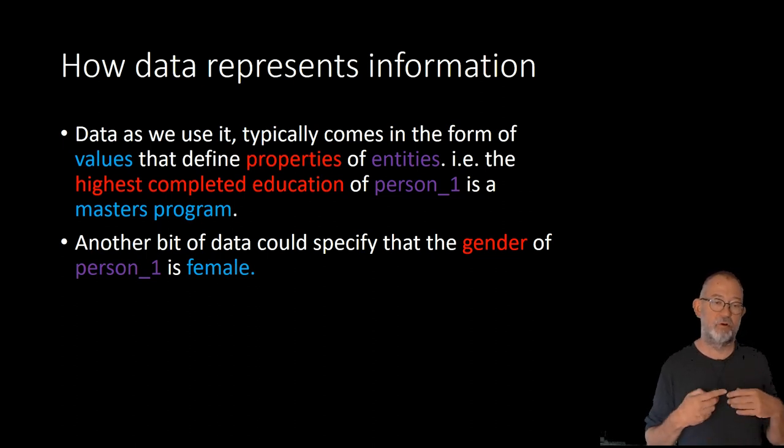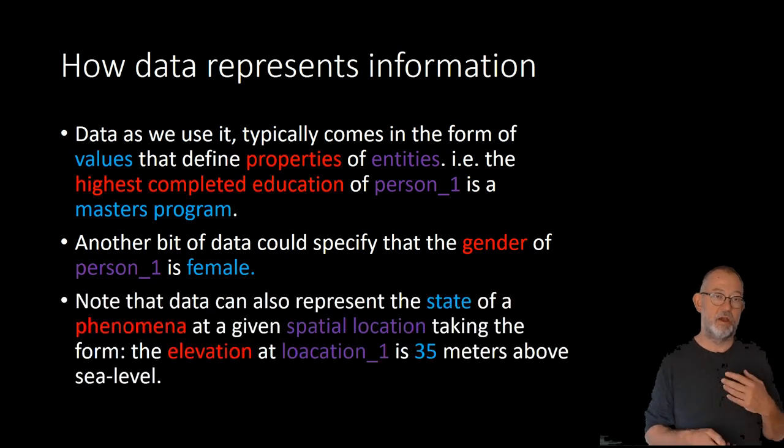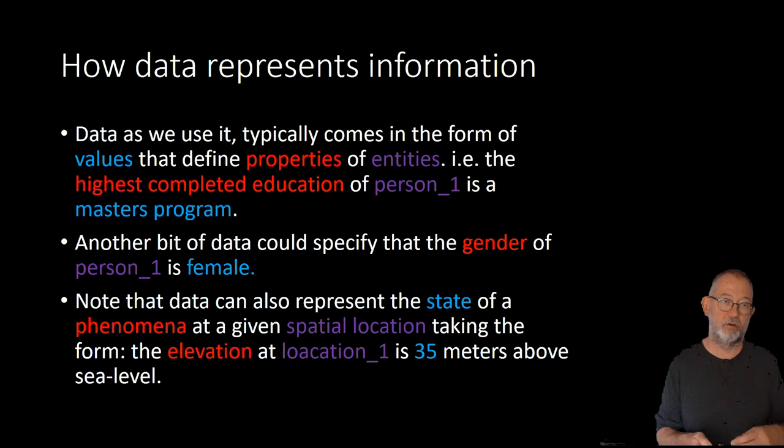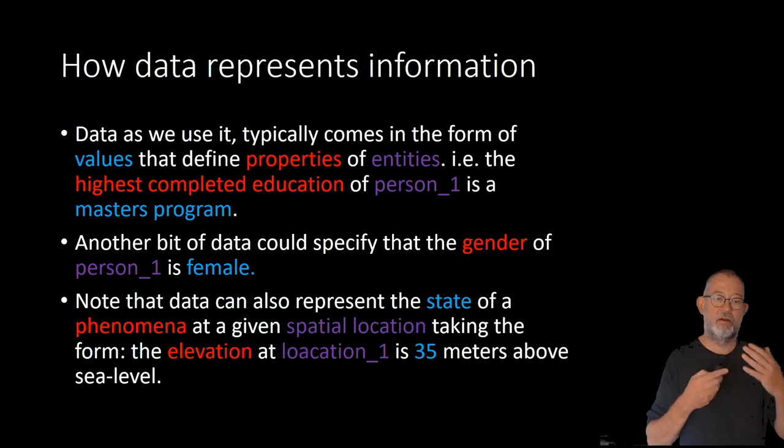One special thing when we talk about geospatial data is that we work with what we call phenomena or property fields. So, for instance, elevation, temperature, things that vary continuous through space. What we do when we represent these is that we represent the state of this property or property field at a specific location. So we could say that the elevation at location one is 35 meters above sea level. So this is a special twist when we have these property fields. So these things are very continuous through space.